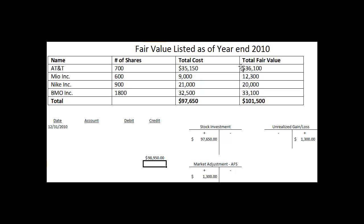What's happened is these individual stocks have increased in total to $101,500. We have a current value in our records of $98,950. So we take $101,500 and subtract $98,950, which shows we're short by $2,550.